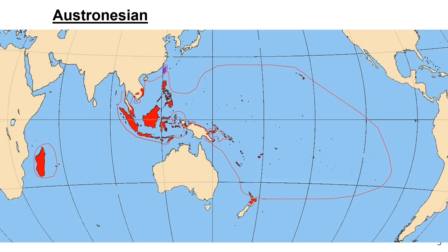The hearth is kind of where a language family or religion will form and begin. I chose this map because the hearth was a different color. The hearth of Austronesian is going to be here in Taiwan, and then it diffused — you can tell it diffused through relocation diffusion. They migrated to other parts of Southeast Asia and Madagascar, and that's how the language family spread. Most of the time, language families spread through relocation diffusion.